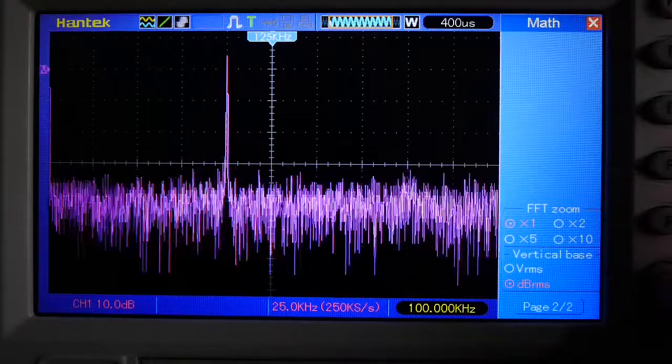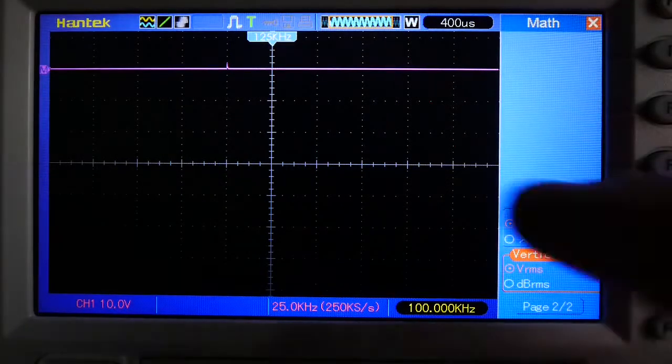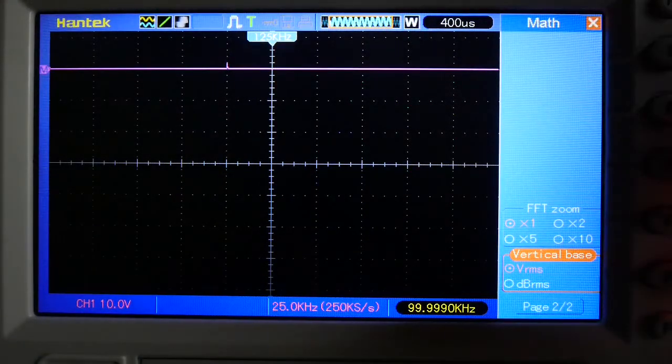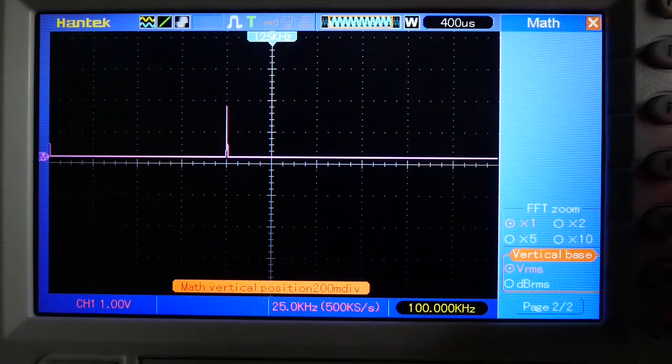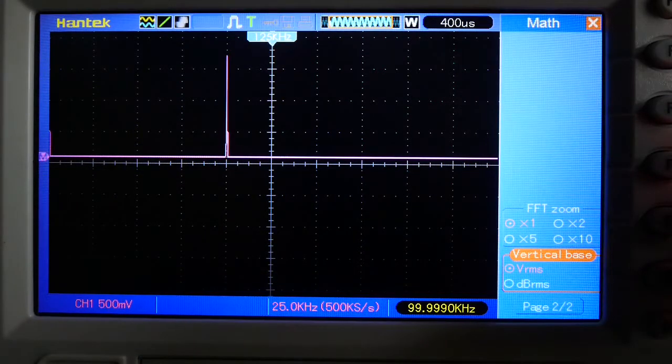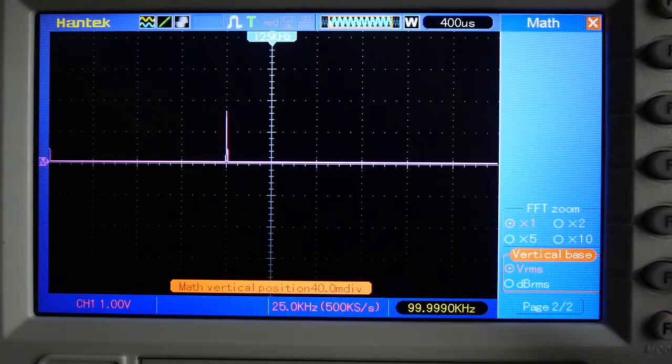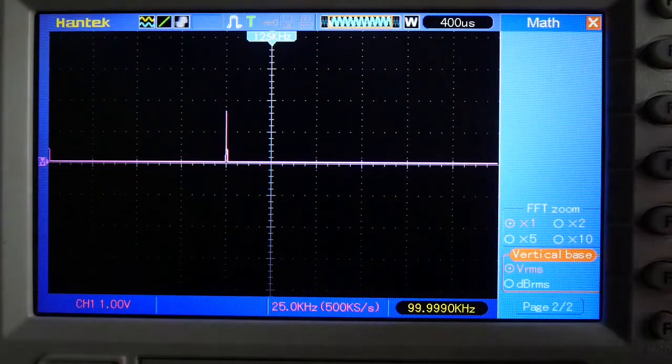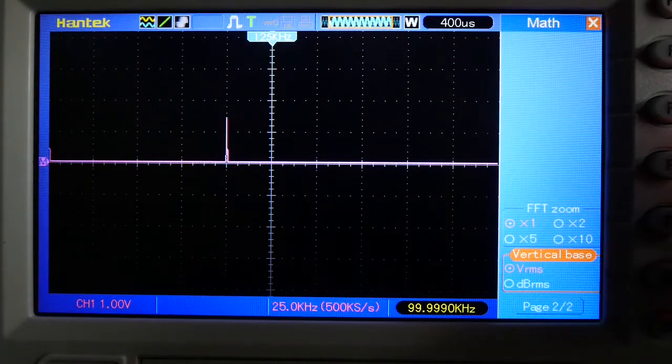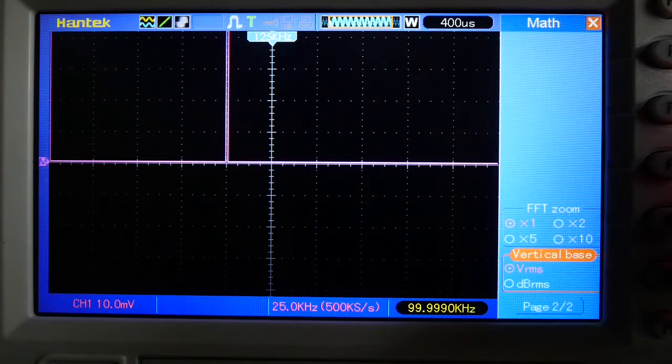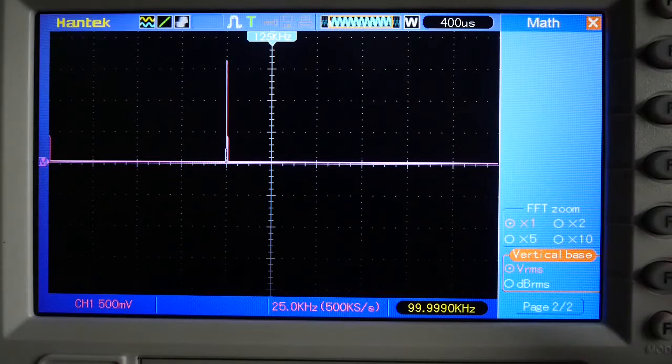So what we're now seeing is we're seeing frequency on the x-axis and we're actually seeing logarithmic scale for power. Now one of the other things you can do on the Hantek is you can change the voltage from dB RMS to volts RMS and we get a quite a different display there. So if we now just move the position scale down and turn up the sensitivity, we'll go there to one volt per division.